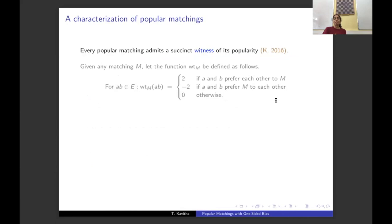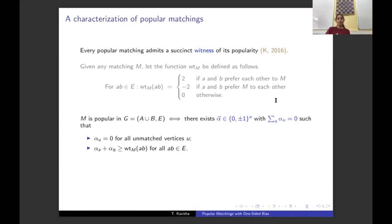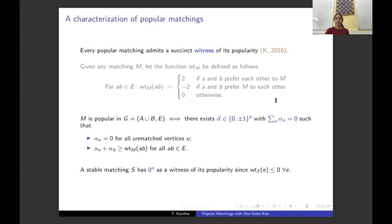Let us see a characterization of popular matchings — this is an LP-based characterization. Every popular matching admits a dual certificate using edge weight function weight_M. Matching M is popular in G if and only if there exists a vector alpha with n entries (one per vertex) such that: the sum of all alpha values is zero; for each unmatched vertex, alpha is zero; and every edge AB is covered, meaning alpha(A) + alpha(B) ≥ weight(AB). Every stable matching has a simple witness of its popularity: the all-zeros vector.